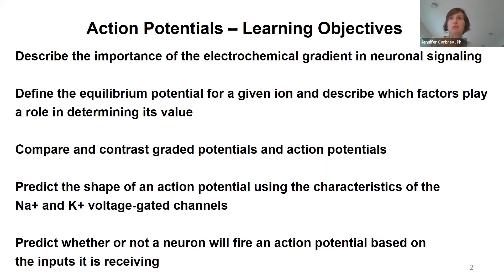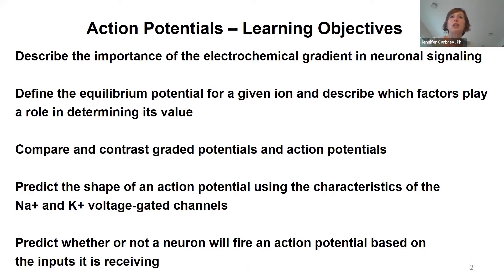When we're talking about action potentials, we're going to have to first talk about a few other concepts. One is the electrical gradient, and the importance of that in allowing us to do signaling. Then after we talk about that, we'll be talking about a concept called equilibrium potential. Each ion that we're going to be talking about will have an equilibrium potential, and we'll talk about how that is determined by the conditions in the cell.